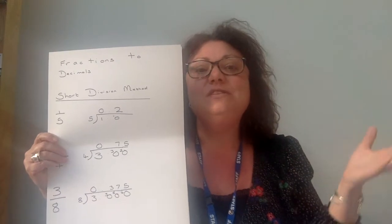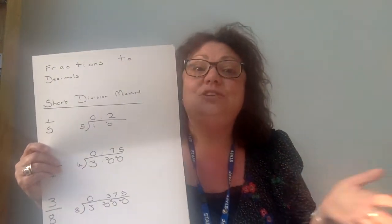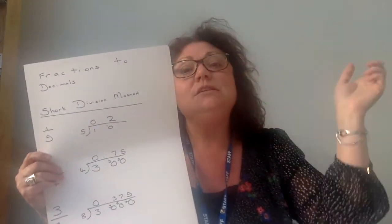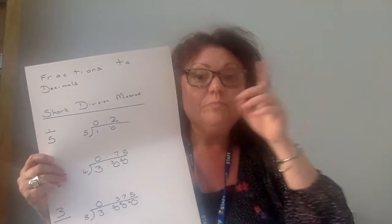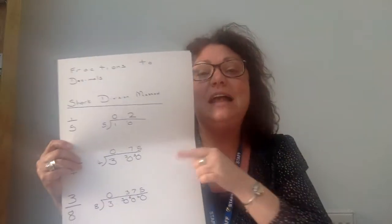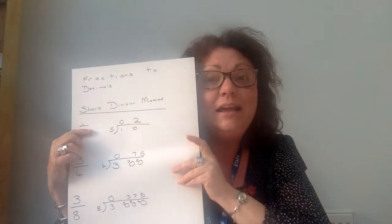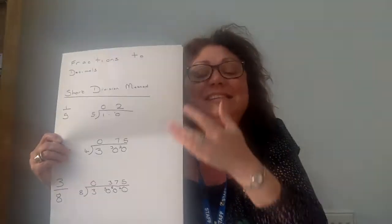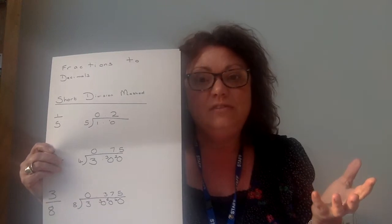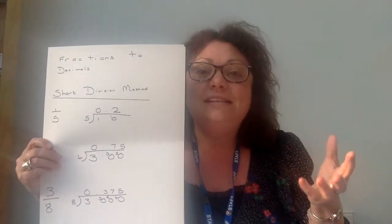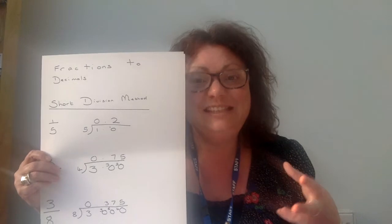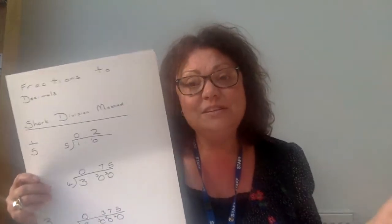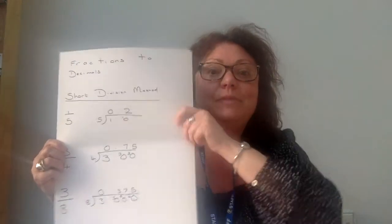So instead of converting it to a tenth — multiplying the five by two to make ten and then the numerator one by two which makes it two, so you've got two tenths — this is an alternative way of doing it. It's a great method because sometimes it might not be apparent. It's easy to change one fifth to a tenth, but if it's a harder fraction that doesn't necessarily go into ten or a hundred or a thousand, this is a brilliant way of doing it.